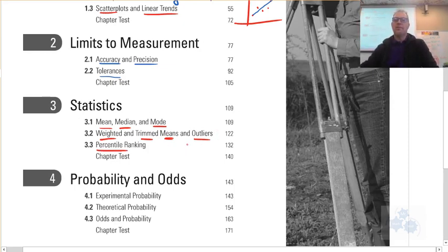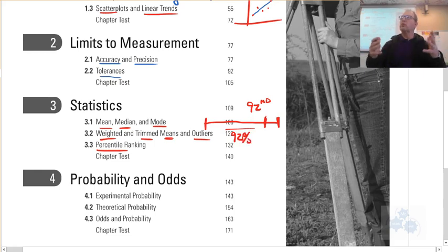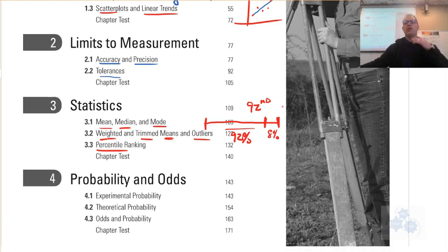Percentile ranking. If you are in the 92nd percentile, that means that of all the data values or all the people or whatever, you are right about here and 92% of people have scores or have whatever less than you. And that means there's about 8% of people that are above you. So if you're the 92nd percentile for whatever this grade, that means there's 8% of people that have a higher grade than you and 92% that have a lower grade than you.